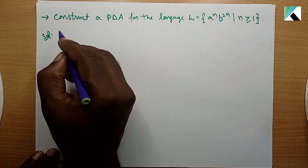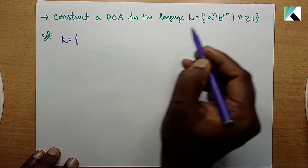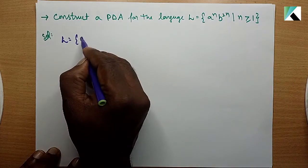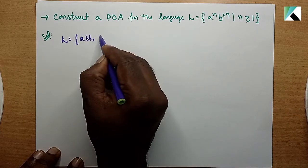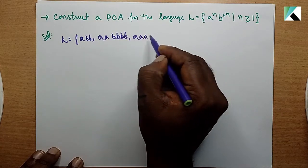L equals single a two b's, abb, aa bbbb, triple a six b's, and so on. These are examples of strings in the language.